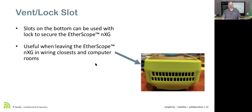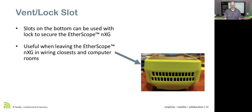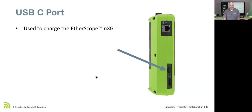Down on the bottom, we have a vent and lock slot — the holes on each side fit a Kensington lock, so you can lock the device down in a wiring closet. The USB-C port is used for charging the unit — plug it into the charger that comes with the unit.